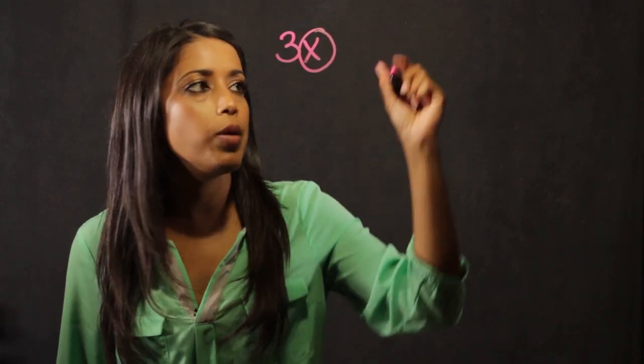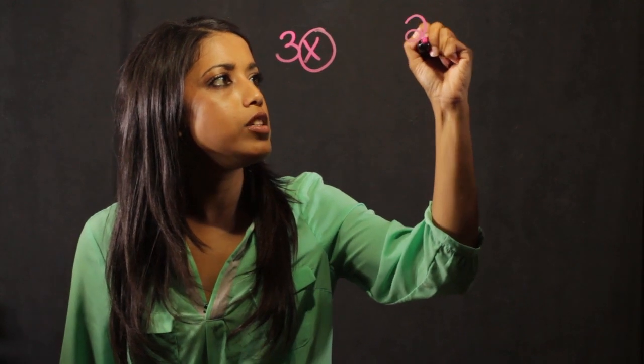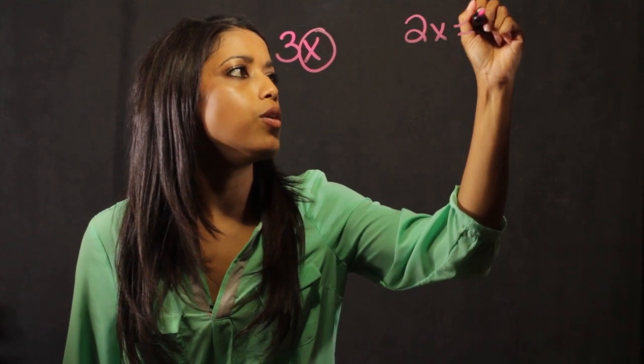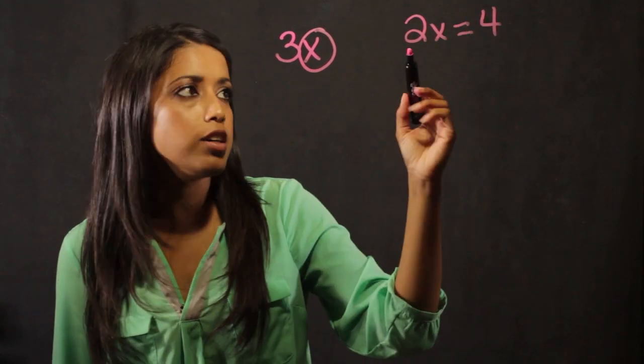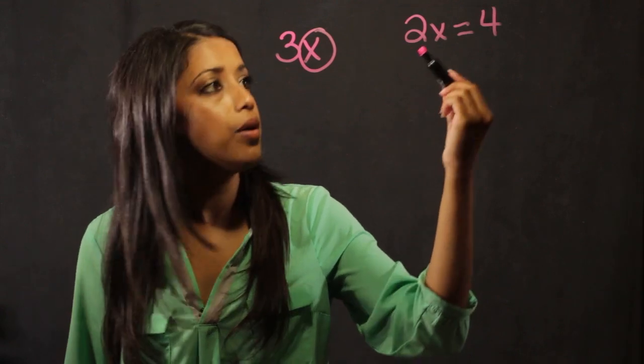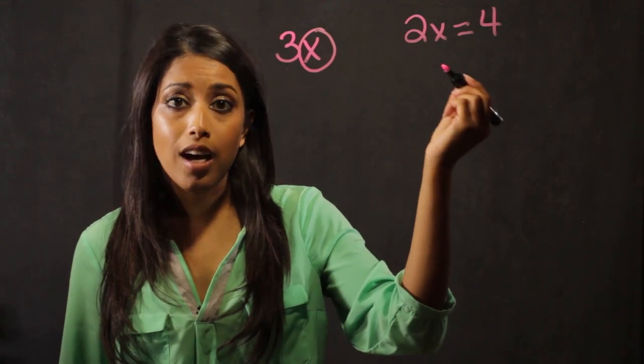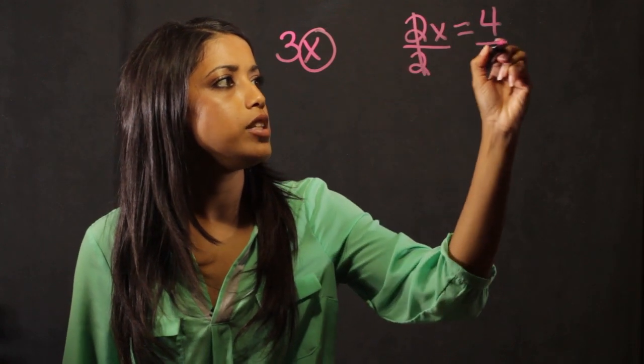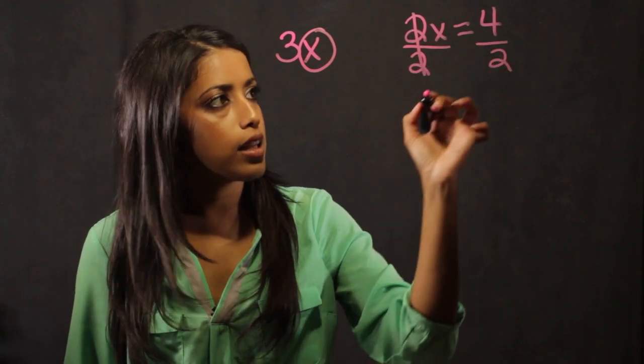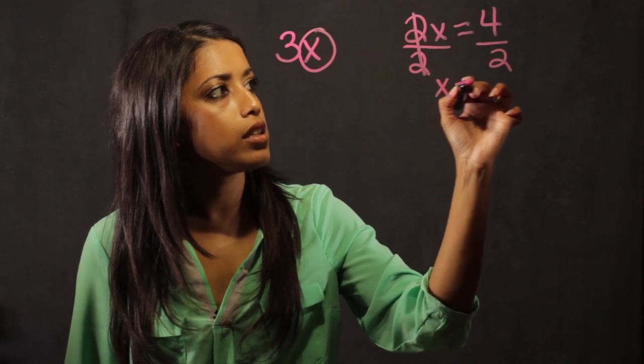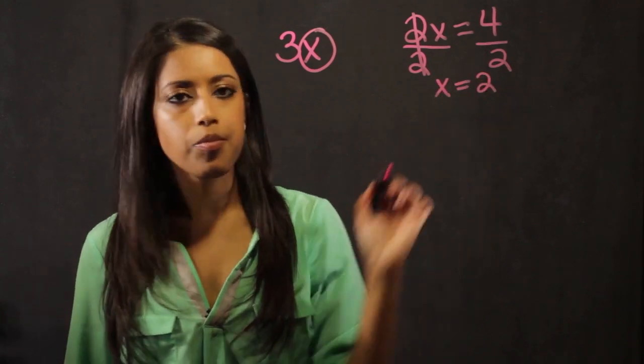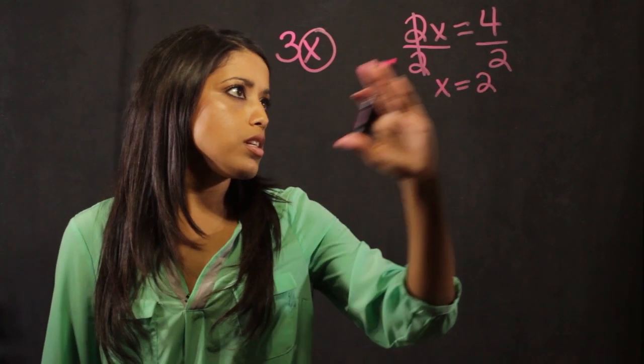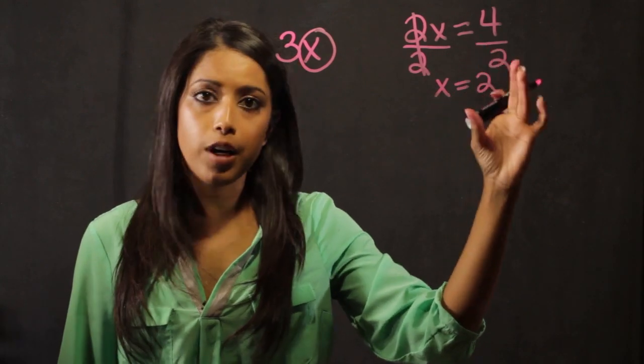We also use variables in equations. An example of that would be 2x is equal to 4, and the variable is going to be representing a number. So if I want to figure out what that number is, I divide by 2 on this side and I divide by 2 on this side, and it lets me know that my variable x is equal to 2. So this is a little bit of an example of how to use a variable in an equation.